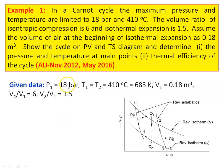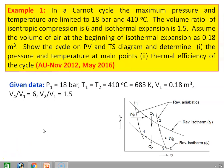Writing down the given data: maximum pressure P1 equal to 18 bar. For the isothermal process, maximum temperature T1 equal to T2 equal to 410 degree Celsius, which is 683 Kelvin. V1, volume at the beginning, is 0.18 meter cube. The volume ratio V4 by V1 equal to 6 and V2 by V1 equal to 1.5. This is the pressure-volume diagram for the Carnot cycle: 1 to 2 is isothermal expansion, 2 to 3 is reversible adiabatic expansion, 3 to 4 is isothermal compression, and 4 to 1 is reversible adiabatic or isentropic compression.